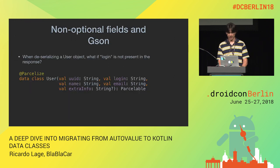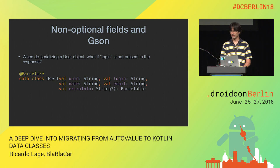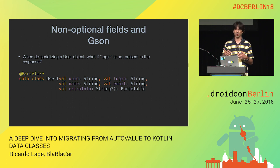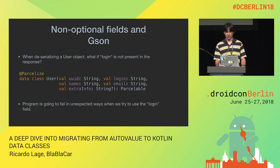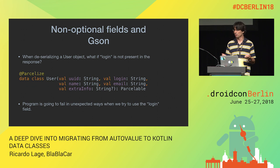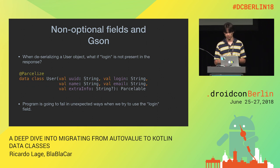Another consideration: we are using GSON, which doesn't have Kotlin support. If a field like 'login' is absent from a JSON response, GSON will assign null to it even though in Kotlin that's not an expected behavior for a non-nullable field. The program will still parse successfully, but fail later in unexpected ways when you try to use that field.